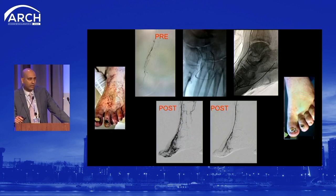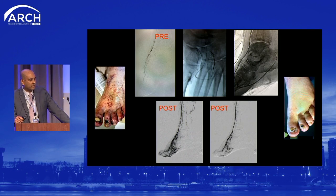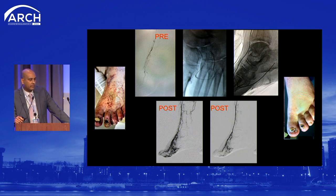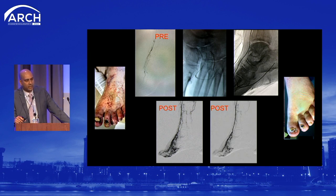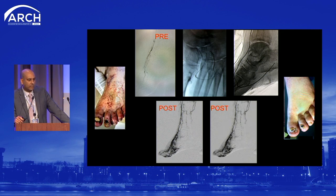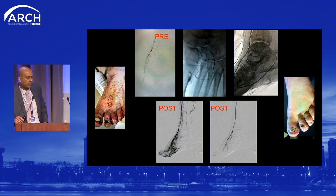Another CLI patient presenting with profound ischemia — dependent rubor, elevation pallor, multiple sites of ulceration and gangrene, with really nothing below the knee. We opted for angiosome-directed therapy, opening vessels directly supplying the ischemic tissue. We recanalized the anterior tibial artery and the pedal plantar loop. We were unable to get into the posterior tibial artery, but luckily this patient had many hibernating vessels in the forefoot, and we achieved a nice angiographic and ultimately clinical result.